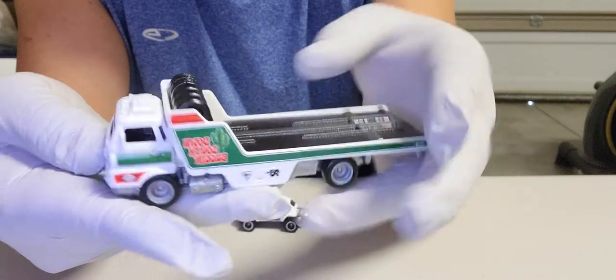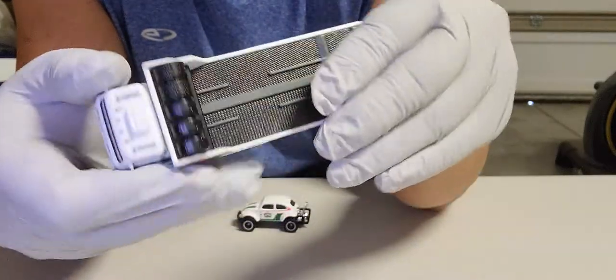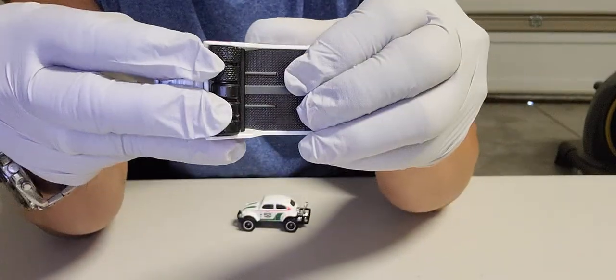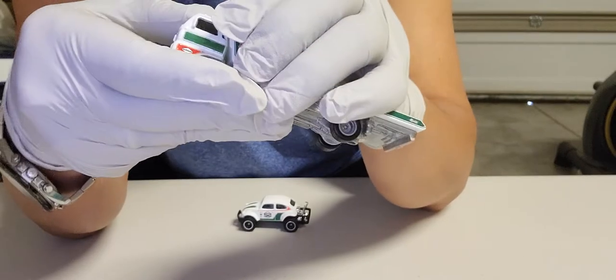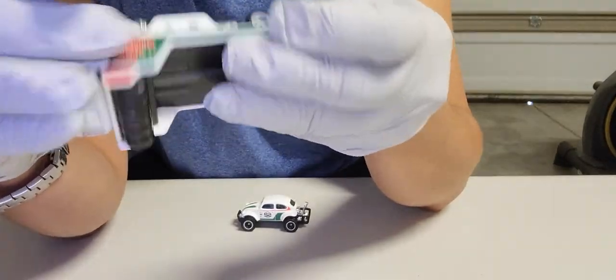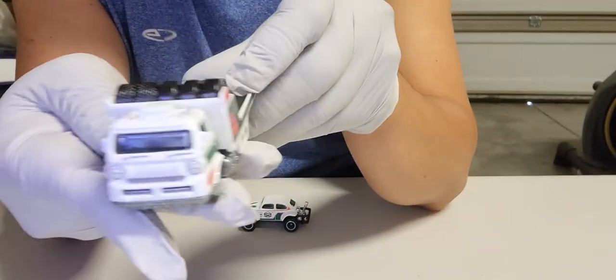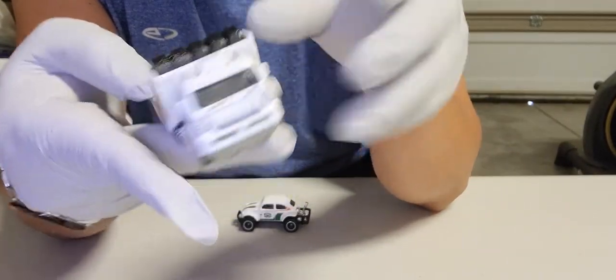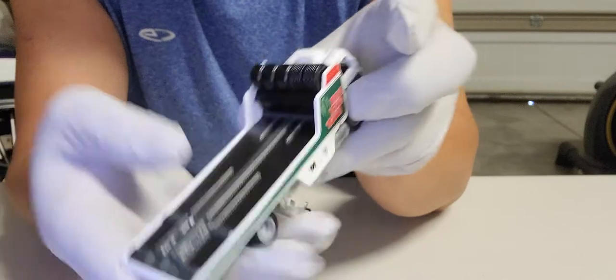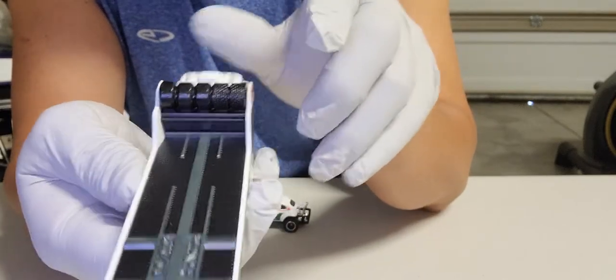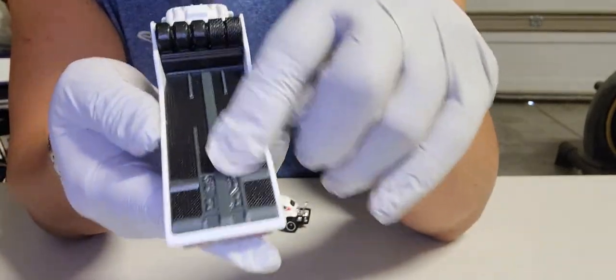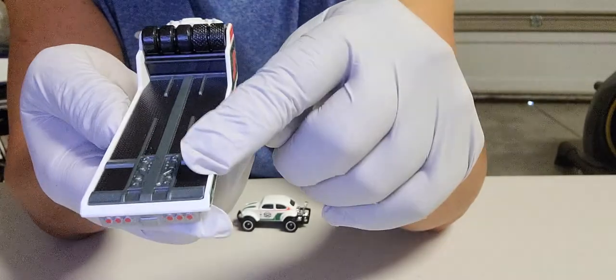There you go. Let's see. I believe this one... nope, it's not movable. Just like that. Nice. There's a spare tire over here. Those are chains. That's how you're gonna pull the Baja Bug.